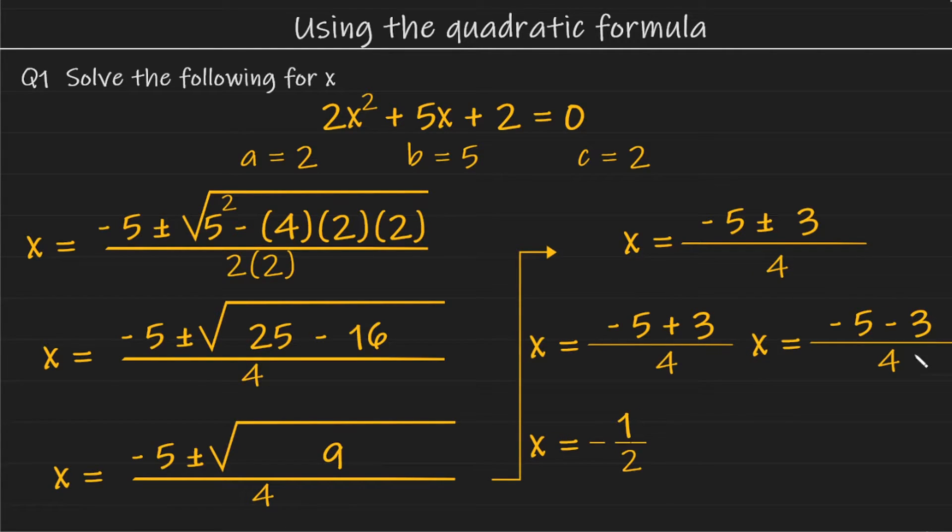The other solution is by calculating this right-hand side equation with a minus. Minus 5 minus 3 gives us minus 8. And minus 8 over 4 is minus 2. And this is our other solution. And there you have it. This is how you use the quadratic formula to solve a quadratic equation.